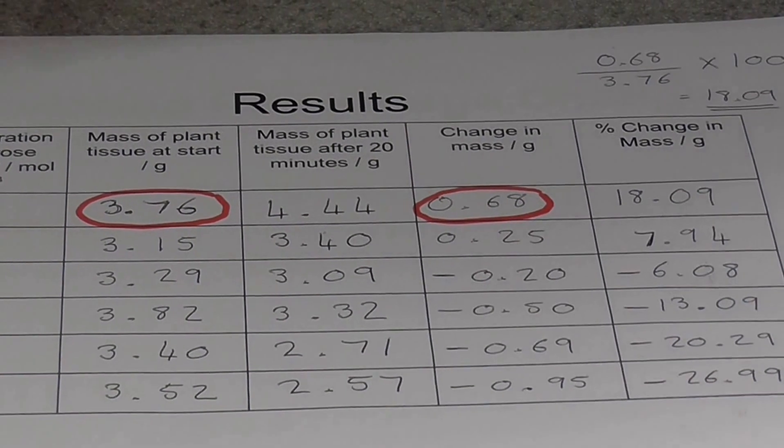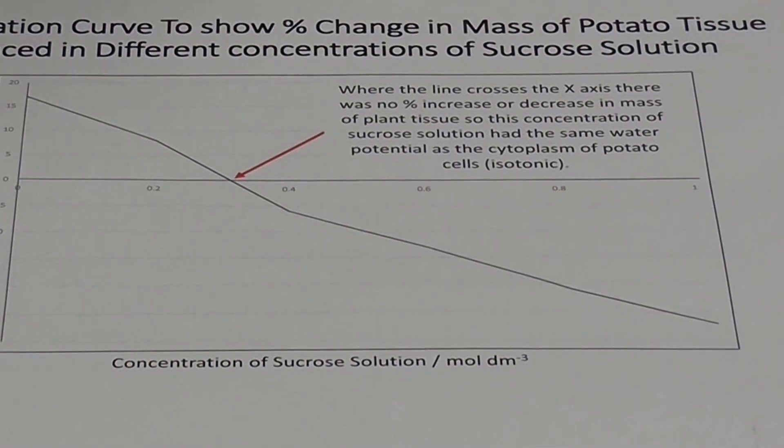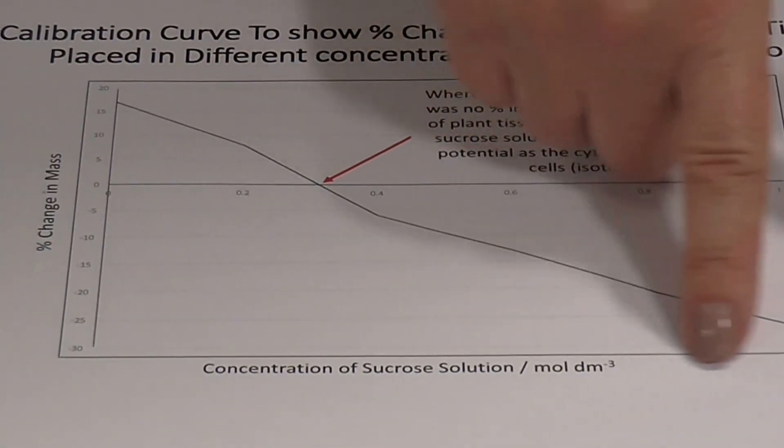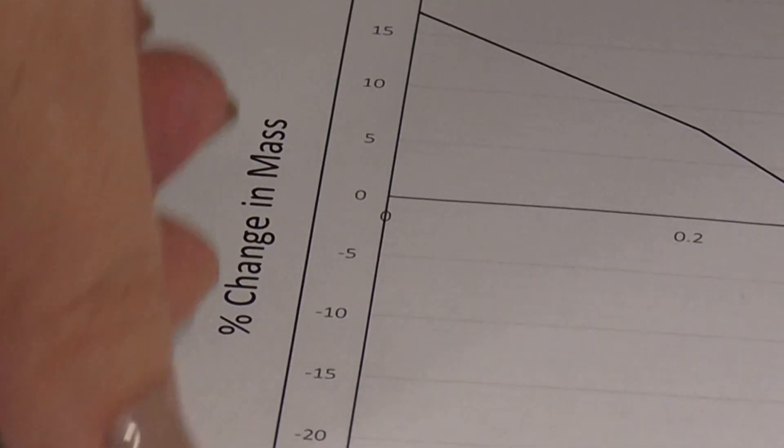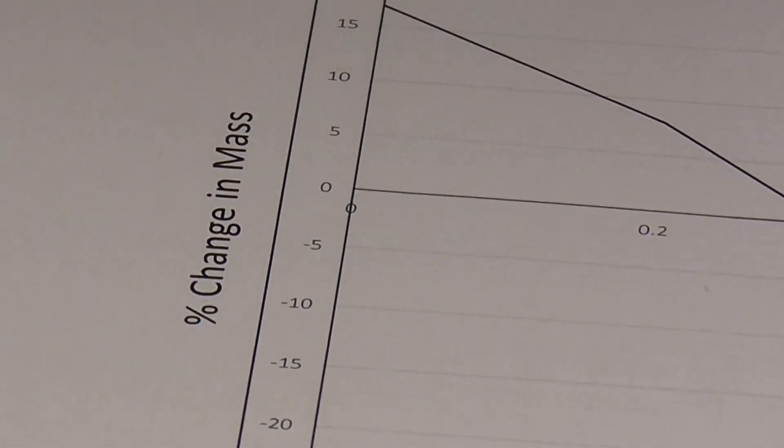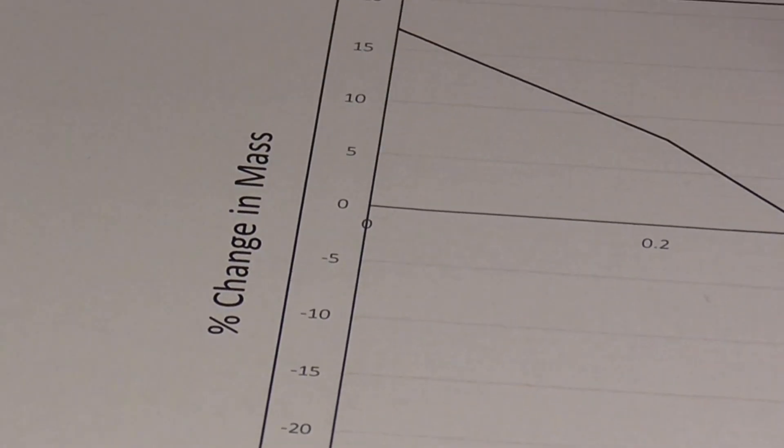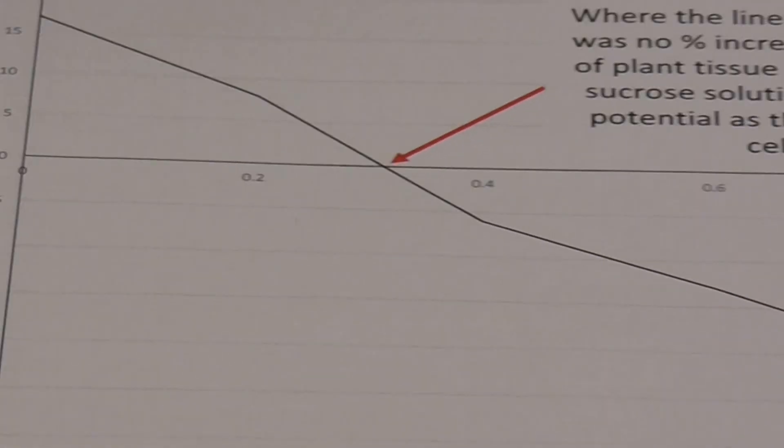Once we've got this final column, we can now plot our results as a calibration curve. And this is the kind of curve that you should get. Let's have a look at what we've got here. We've got the concentration of sucrose solution across the x-axis there. We've got percentage change in mass up the y there. And notice it's quite an unusual graph here, because zero is there, because some chips have actually lost while others have gained.